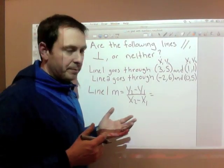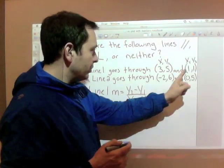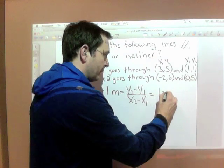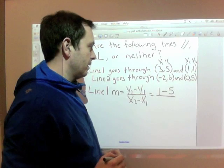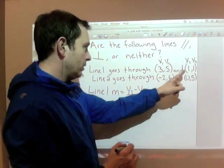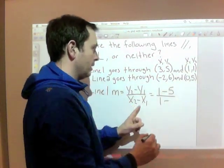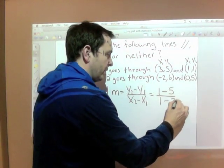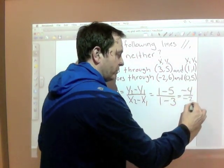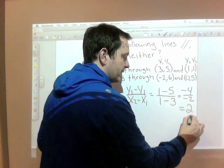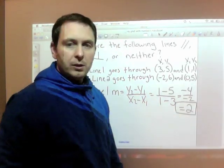That's on your formula sheet, something we worked with last day. So y two is one, y one is five, x two is one, x one is three. So one minus five is negative four, one minus three is negative two. So my slope is two for line one.